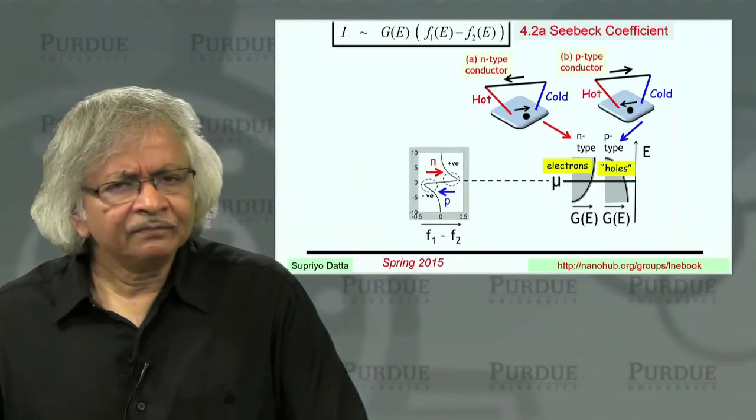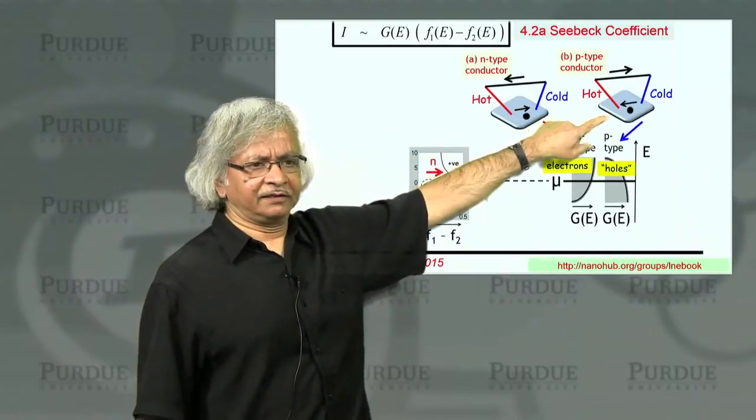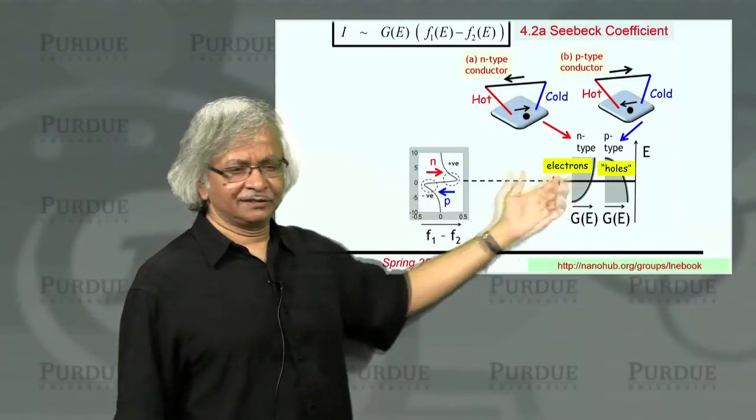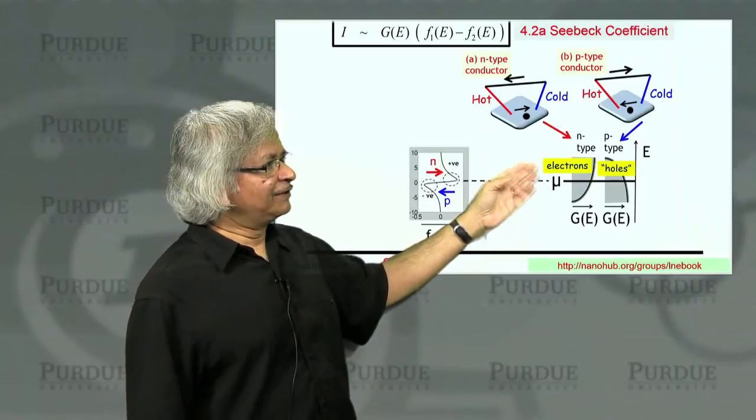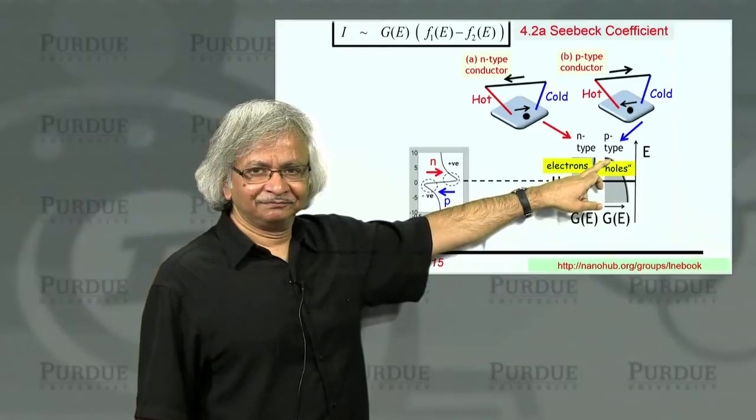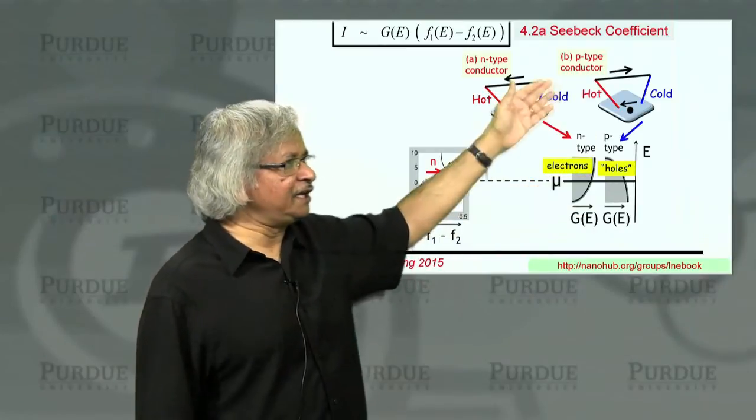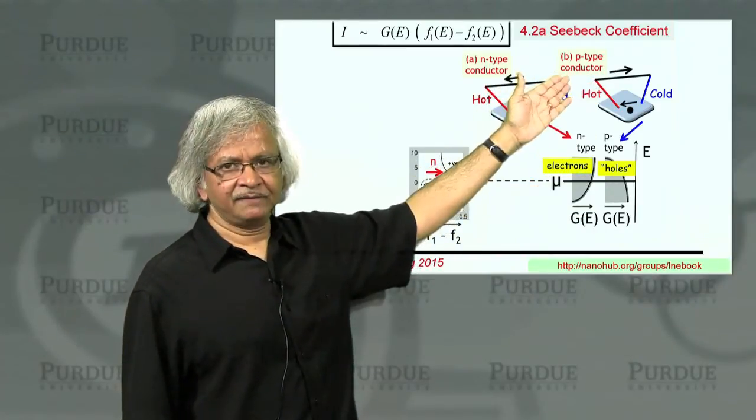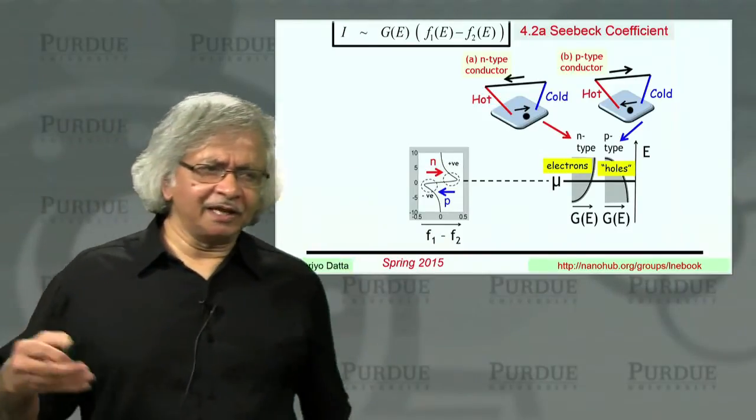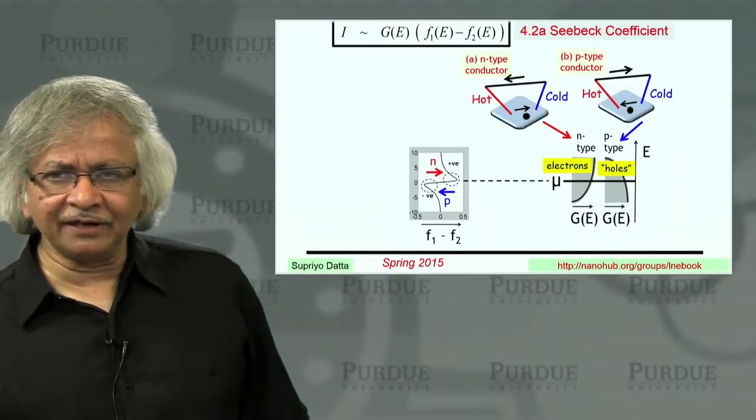What actually carries current in any material we're talking about are the electrons. And so it doesn't seem believable that a measurable effect, something you can measure in the lab, depends on your conceptual convenience. Some people might prefer to think of p-type in terms of electrons rather than holes. And holes are just conceptually convenient in some cases. But that cannot change a measurable effect.